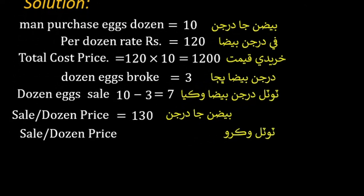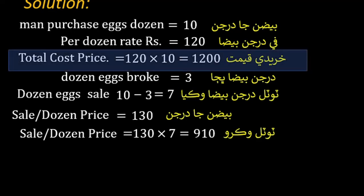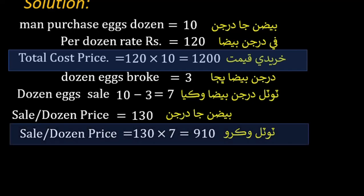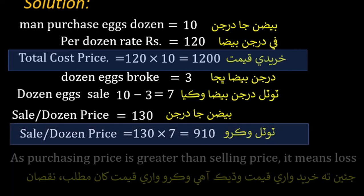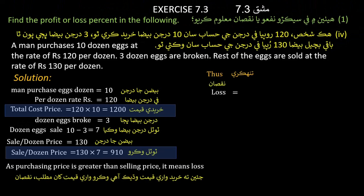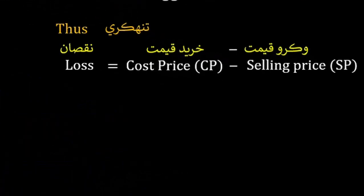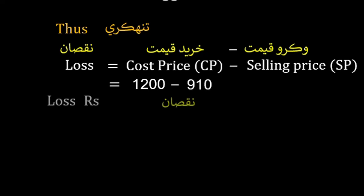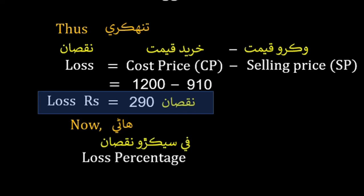He sells only 7 dozen at 130 rupees per dozen. Total sale price = 130 × 7 = 910 rupees. Cost price is 1200 rupees and selling price is 910 rupees. Since purchasing price is greater than selling price, it means loss. Loss = cost price − selling price = 1200 − 910 = 290 rupees.